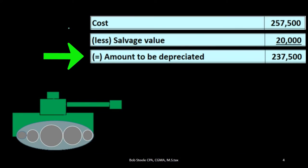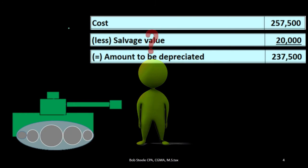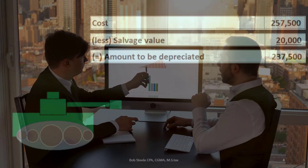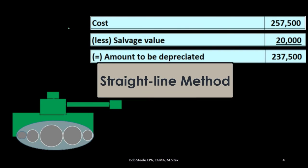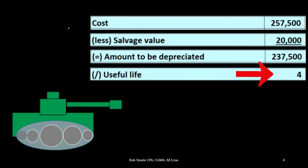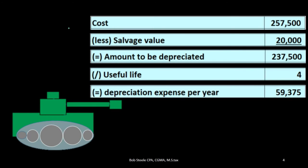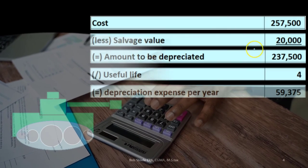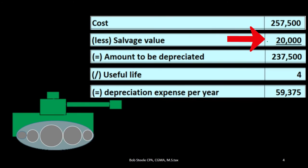That gives us the amount to be depreciated. How long are we going to have this equipment? That's the useful life. If we say we're going to have it for four years and then sell it at the salvage value, a straight-line method means we divide by four years and depreciate it at an even rate of $59,375 per year. That means we depreciate $59,375 four times over the four-year period, giving total accumulated depreciation of $237,500, and leaving a book value equal to the salvage value of $20,000 after the useful life has expired.